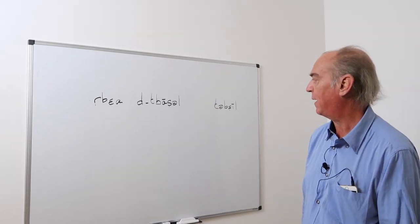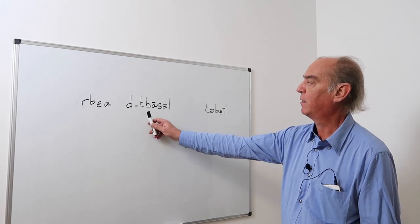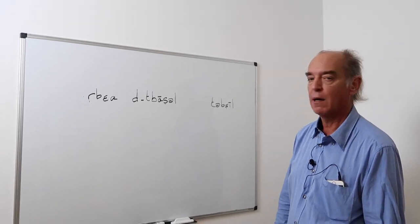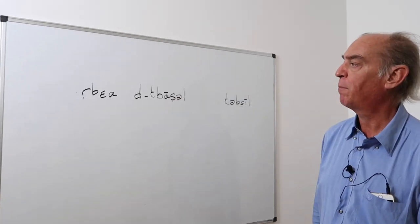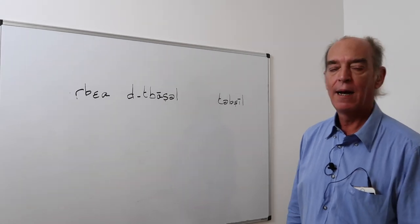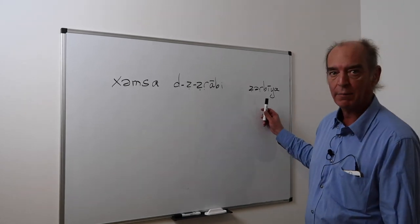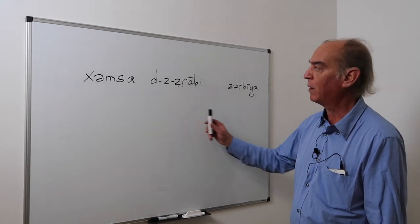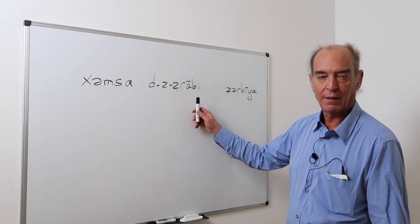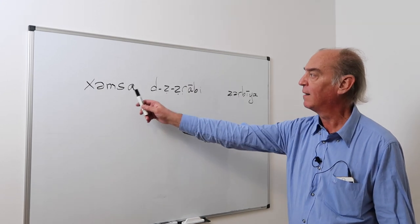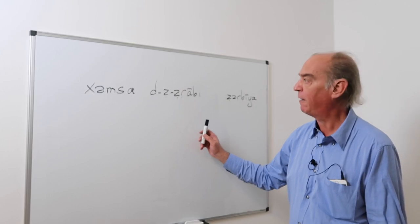Plates. One plate in the singular is tepsil. The plural is what is called technically a broken plural, tbasel. So four plates, we say arba d tbasel. Carpets. The singular is zarbiyah. The plural, which is a broken plural, is zrabi. Khimsa d zrabi is five carpets.